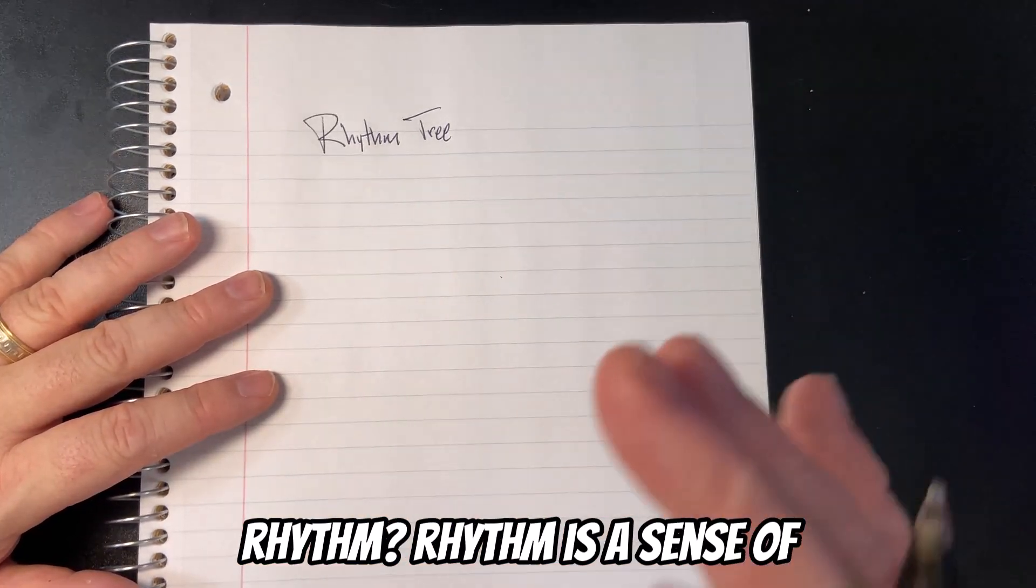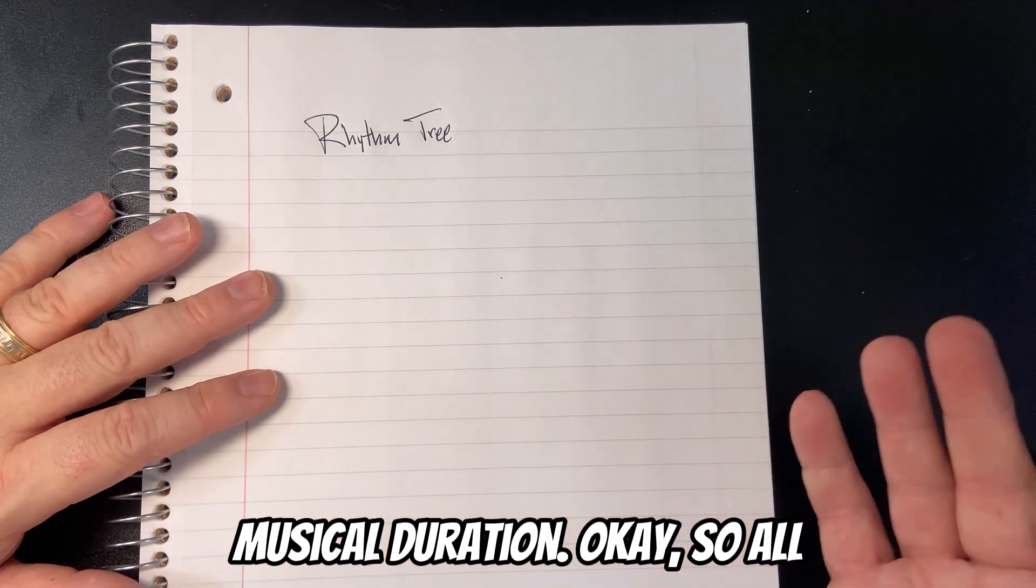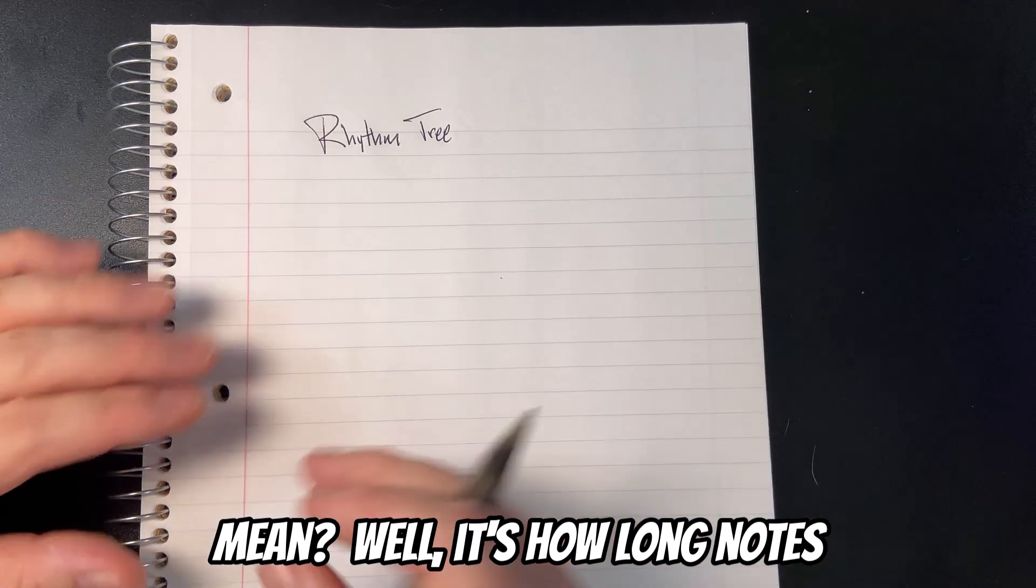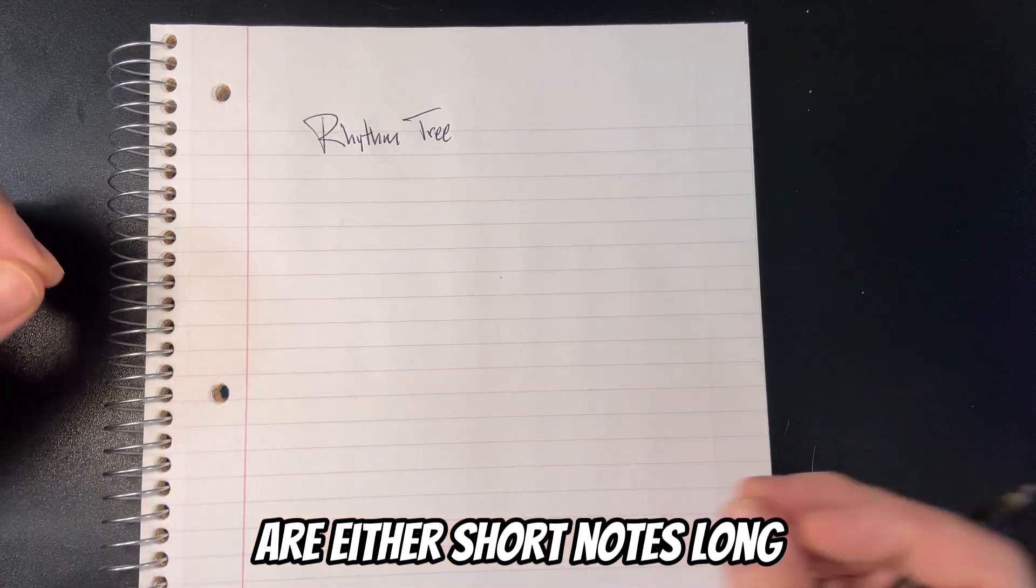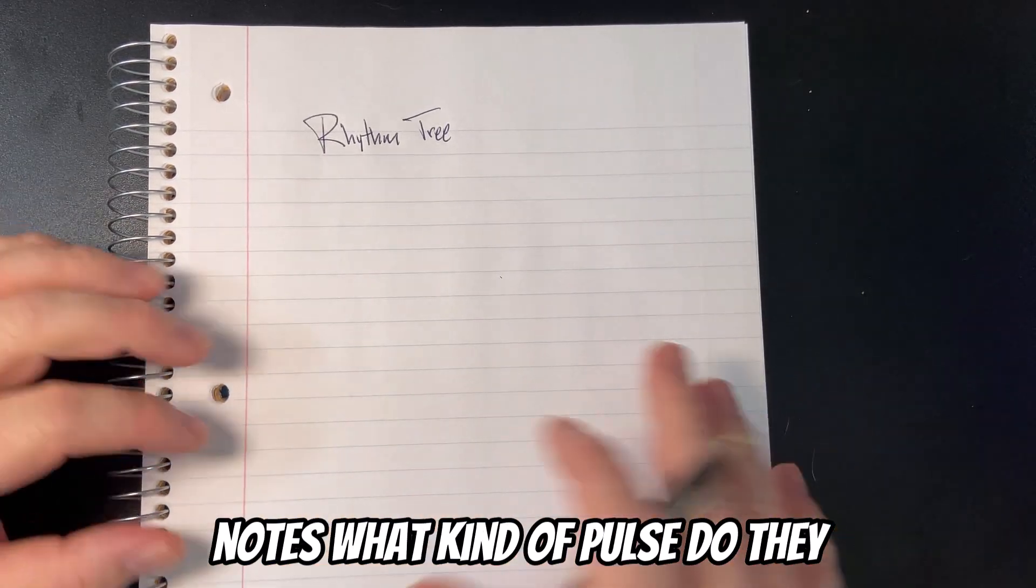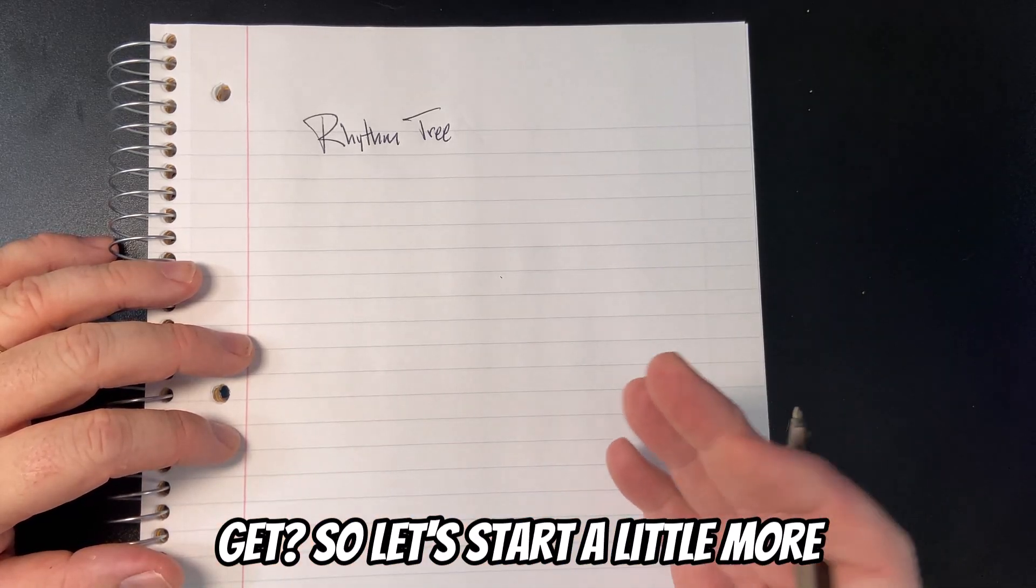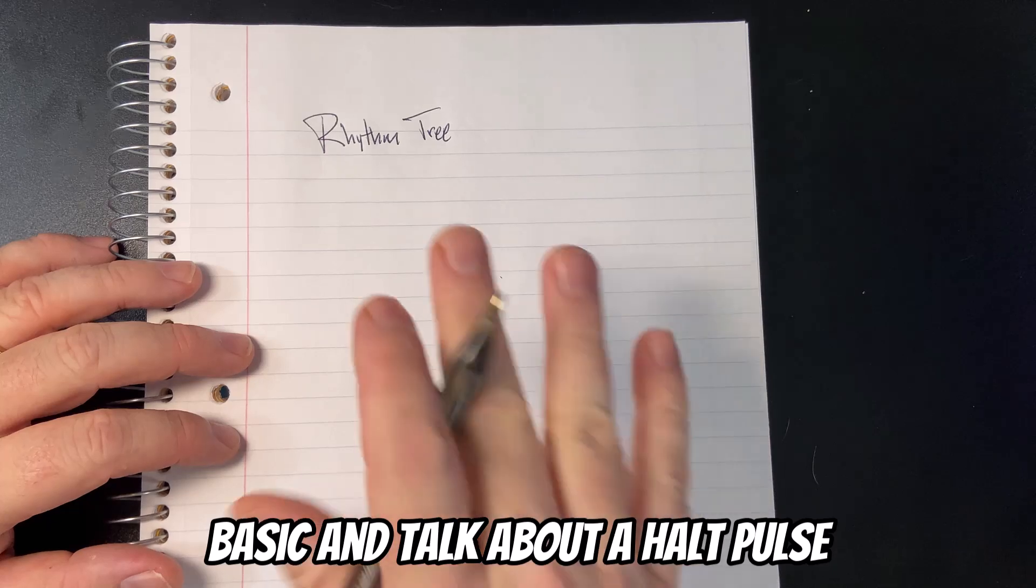Rhythm is a sense of musical duration. Duration is a big word. What does that mean? Well, it's how long notes are - either short notes, long notes, what kind of pulse do they get? So let's start a little more basic and talk about a pulse.